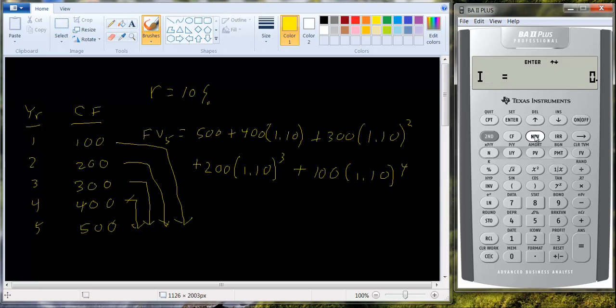So we can hit the NPV function. It asks us for an interest rate. We say the interest rate is 10%. Enter. We go down. Let's go down one more. NFV, net future value. And let's hit compute. And we get the future value is equal to $1,715.61. Okay. So that was pretty convenient, rather than having to calculate each one of these and then add them all up.